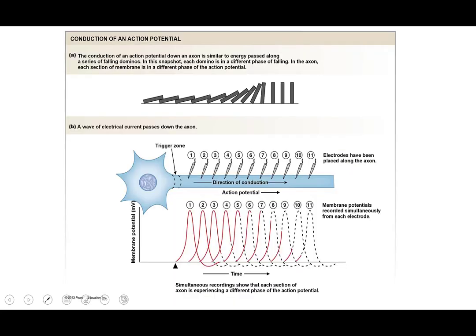Think of an action potential like a domino effect — it's regenerative. Once we hit the trigger zone above threshold, ions flow into the axon, depolarizing the membrane. As we move down the axon, this keeps happening: each depolarized region triggers the next set of ion channel gates to open, like dominoes falling in a line. This is how we maintain a constant level of depolarization, which we call saltatory conduction.